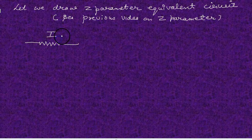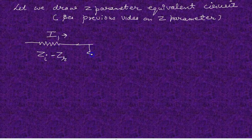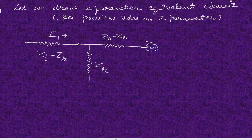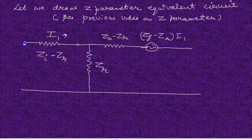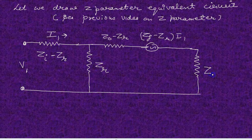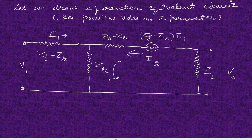We are going to draw the equivalent circuit using the Z parameters first of all. This is the circuit of a two-port network using Z parameters, through which two currents are flowing: I1 and I2.